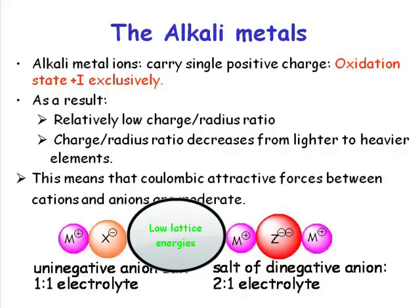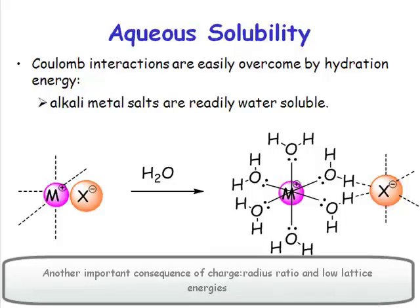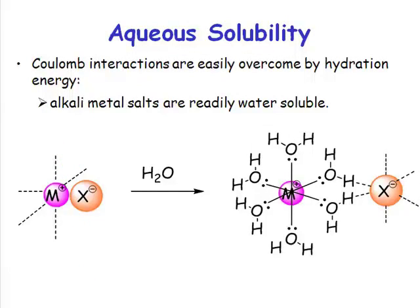Relatively low lattice energies will translate into relatively low melting points for the ionic solids. So a lithium salt is going to have typically a lower melting point than a magnesium salt, for example, simply because the ionic interactions are going to be weaker because the charge is lower. It has another important consequence: because the lattice energies are relatively low, when you dissolve an ionic solid you have to break up the ionic lattice. The weaker the ionic lattice, the easier it is to break it up. So lithium, sodium, and potassium salts are much more soluble than magnesium or calcium salts because of this lower charge-to-radius ratio — the Coulombic interactions are weaker.